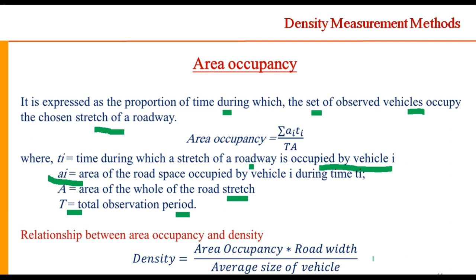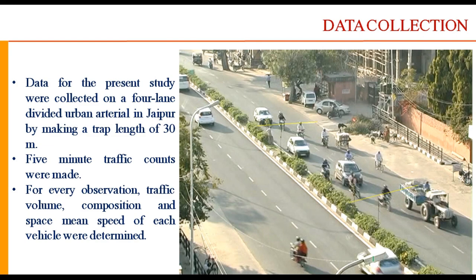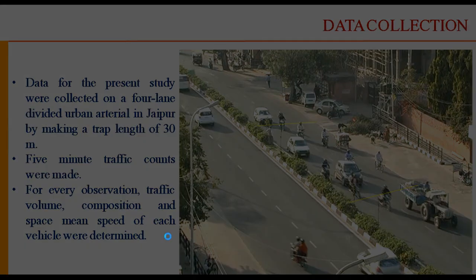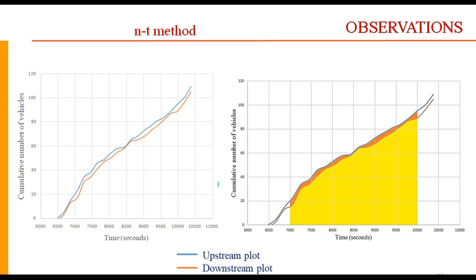To illustrate these five methods, data was collected on a four-lane divided urban road in Jaipur. A trap of 30 meters was made on the road. Five-minute traffic volume counts were taken, and for every observation traffic volume composition and space mean speed of each vehicle type were determined. One data set corresponds to five-minute data, and the vehicle count was projected to one hour.